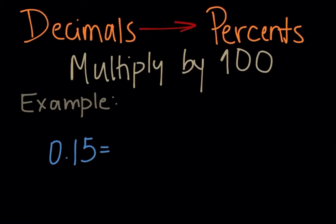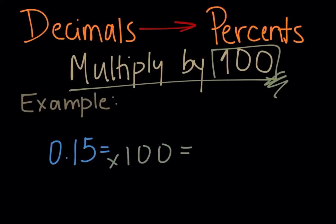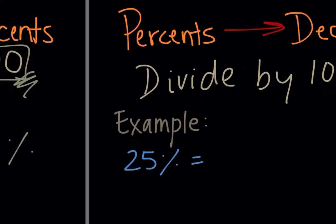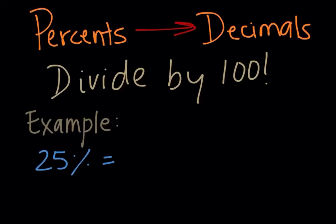The next one is decimals to percents. This one is just straightforward, you multiply it by 100. When we talk about percents, we always are working with the number 100. So you have the decimal 0.15, the only thing you need to do is multiply by 100, which is 15 percent. As easy as that.